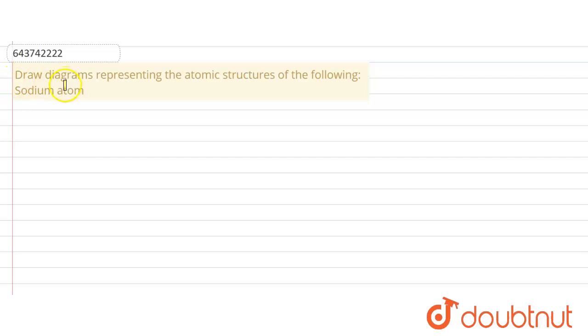In this question, asked about draw the diagram representing the atomic structure of the following. Here it is, draw the structure of the sodium atom. So we know that the sodium atom contains 11 protons.